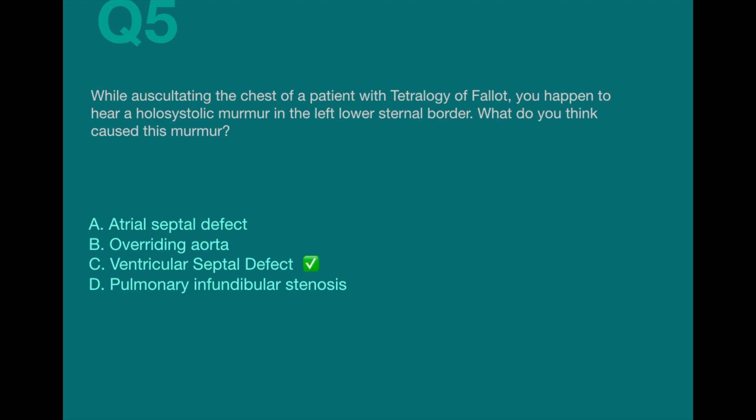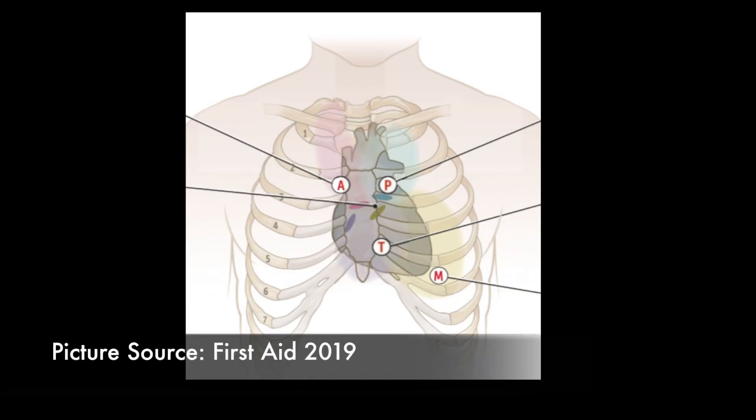The answer to this question is option C. This is the heart and this is the sternum. Like I said earlier, the right ventricle is the most anterior part of the heart. So, when blood flows through the ventricular septal defect, it is best heard at this point, the left lower sternal border.